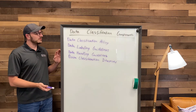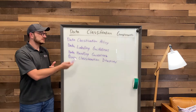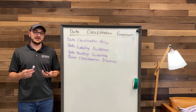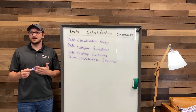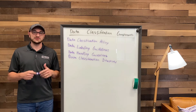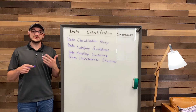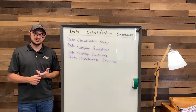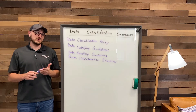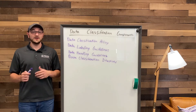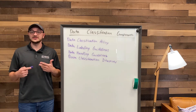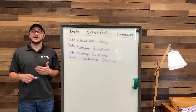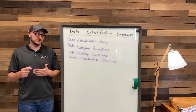The second component of a data classification framework is the data labeling guidelines, and these focus on naming the data. These guidelines focus on naming your files or folders in a specific way so that as soon as you look at the name you know what classification level it is and whether or not you can use it. Additionally, automated tools like DLP systems can automatically detect those files, know what level they are, and protect them accordingly.